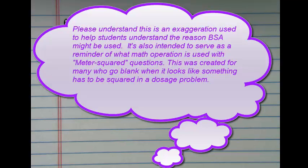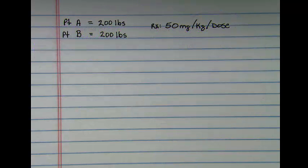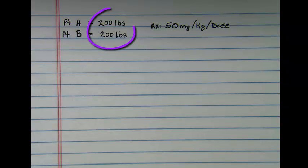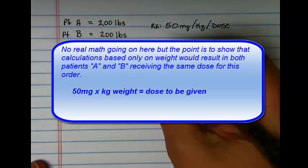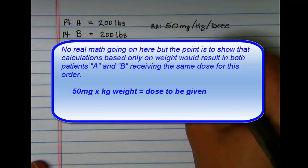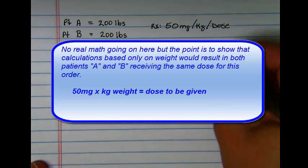If I were going to calculate a drug dose that was ordered as 50 milligrams per kilogram for each dose, I would convert this pound weight for both of these patients, multiply the 50 milligrams times the kilogram weight to get the dose.